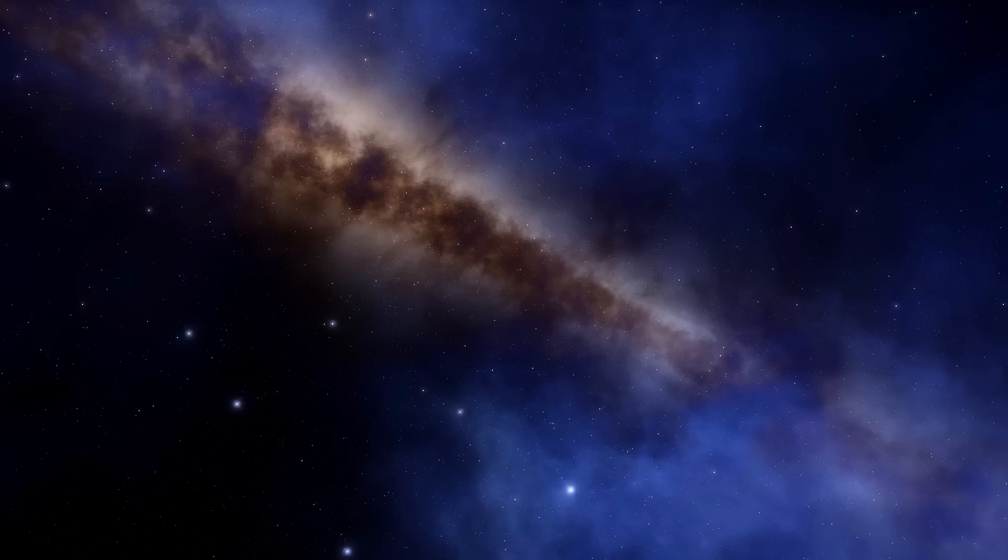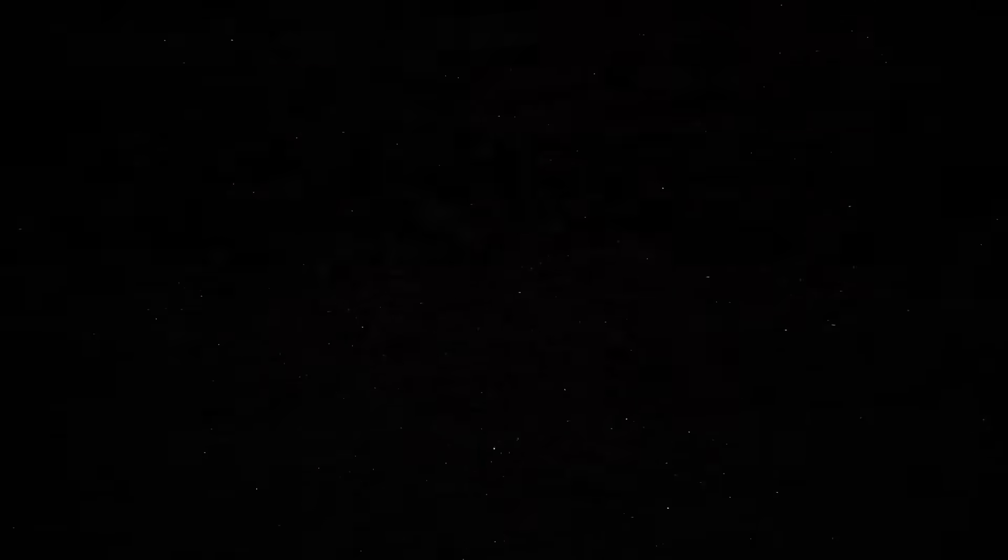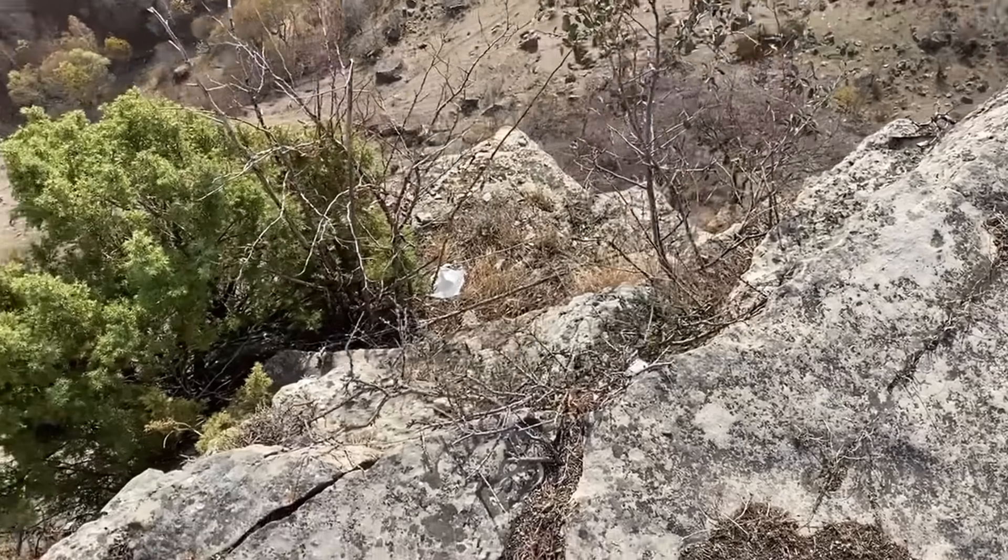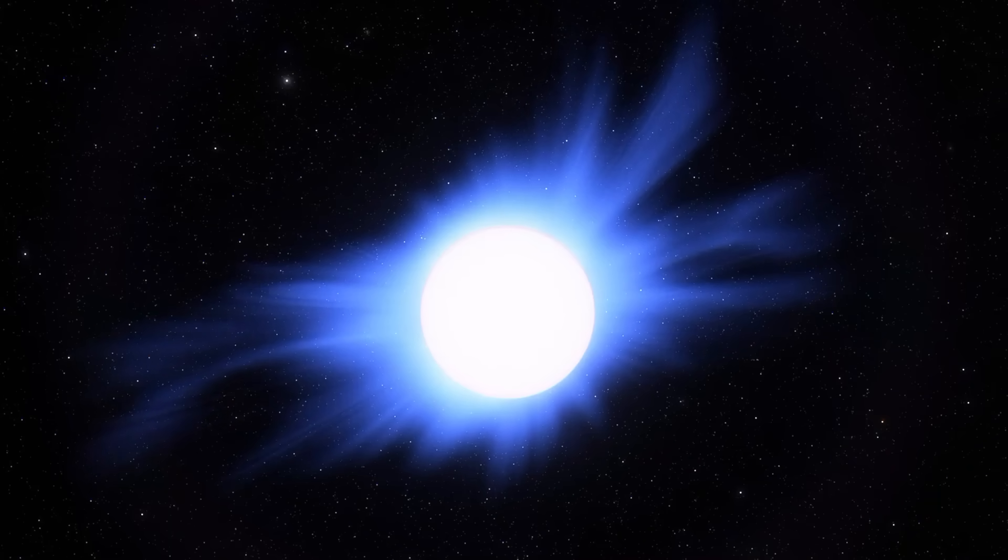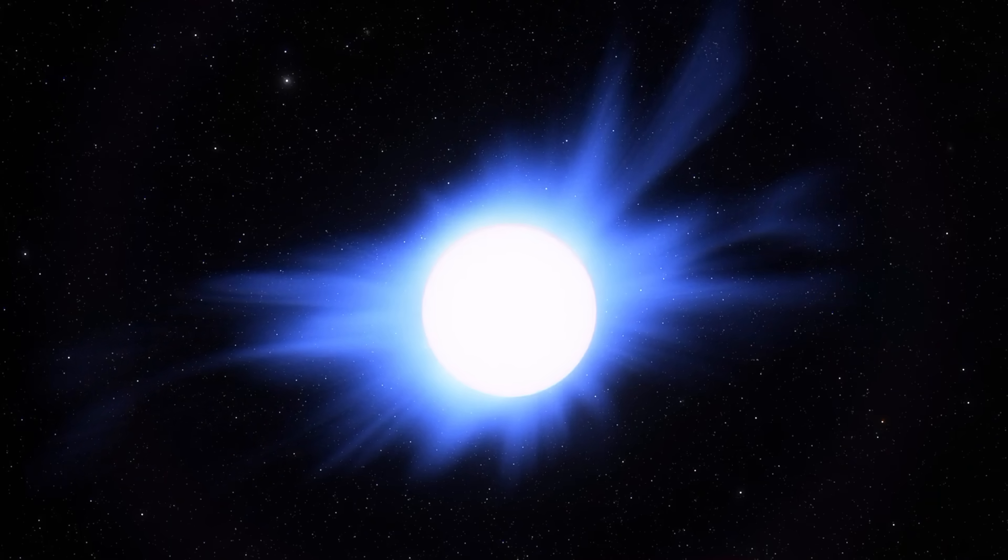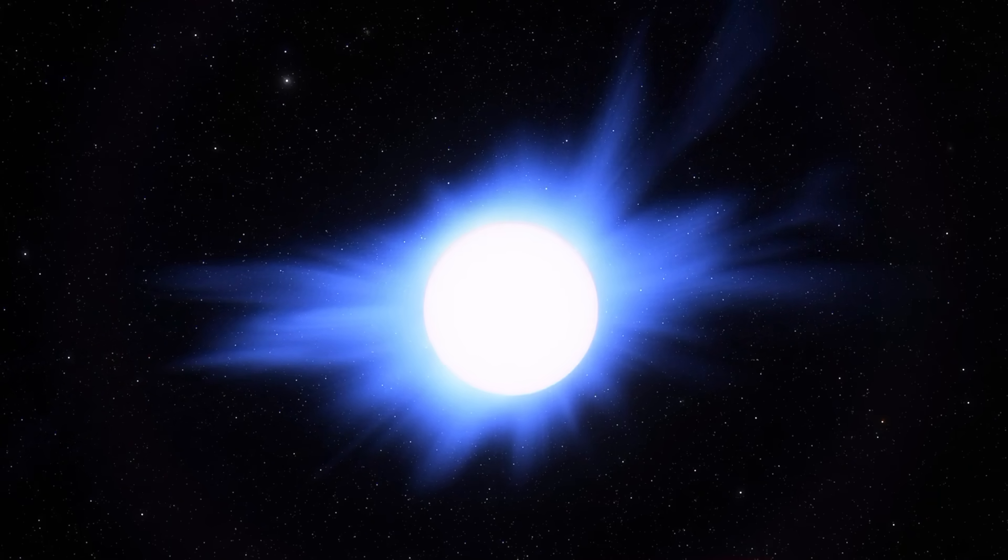But what does all this mean? The evidence is overwhelming. 3I Atlas is not behaving like any comet we know. Its chemical makeup points to a birthplace far from the sun, in a region where water is scarce and heavy elements are abundant. Its anti-tail, a backward streak of dust and gas, may be explained by its exotic chemistry and the way it interacts with solar radiation.